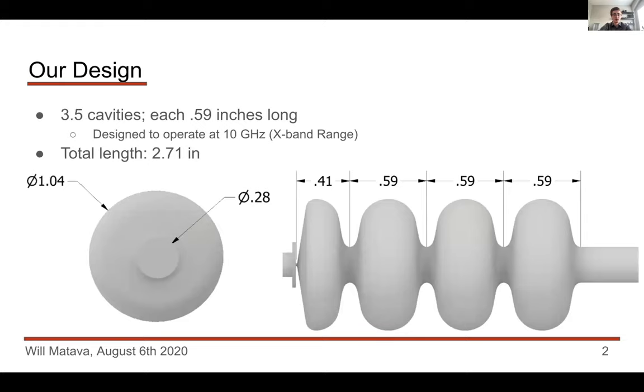Here's a picture of our design from different perspectives. We have three and a half different cavities, and each of the full cavities is a little less than six-tenths of an inch long. This is our half cavity. It's designed to operate at 10 gigahertz. The electric field inside is going to have a frequency of 10 gigahertz. This amounts for a total length, at least of the accelerating cavity, not accounting for things like power sources and cooling, of 2.71 inches.